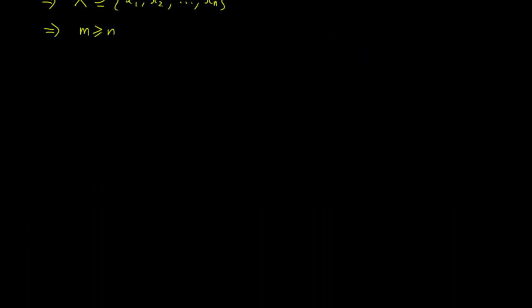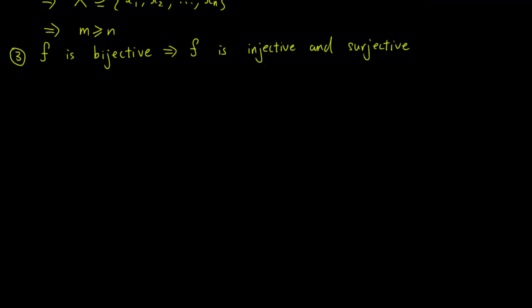For the third point, f being bijective implies that f is injective and surjective, so using the first two points, we have that m is less than or equal to n, and m is greater than or equal to n. So we must have m equal to n, and this completes the proof.